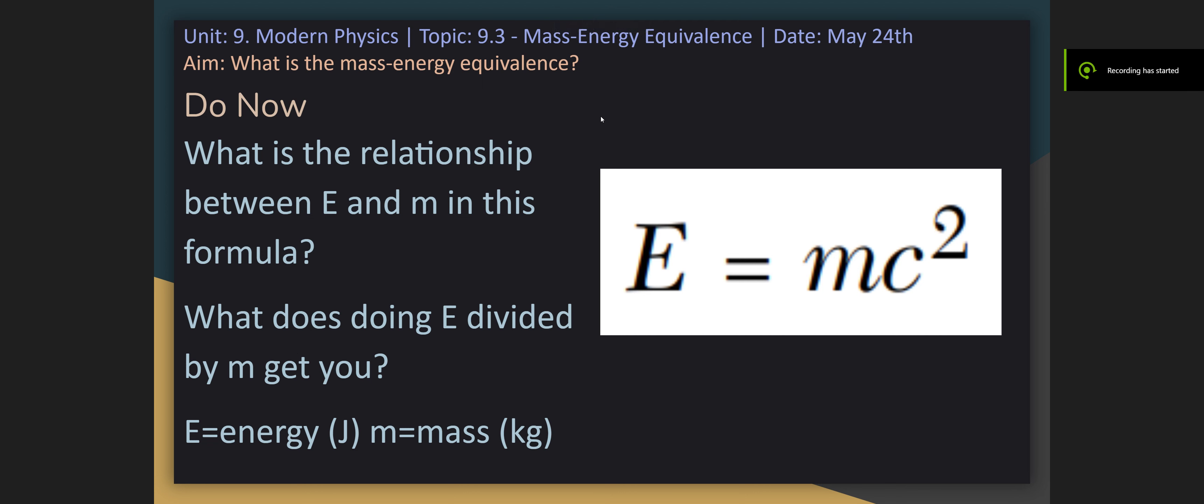All right, this is going to be 9.3. We're going to do this extremely quickly. So you have this formula, E equals mc squared.